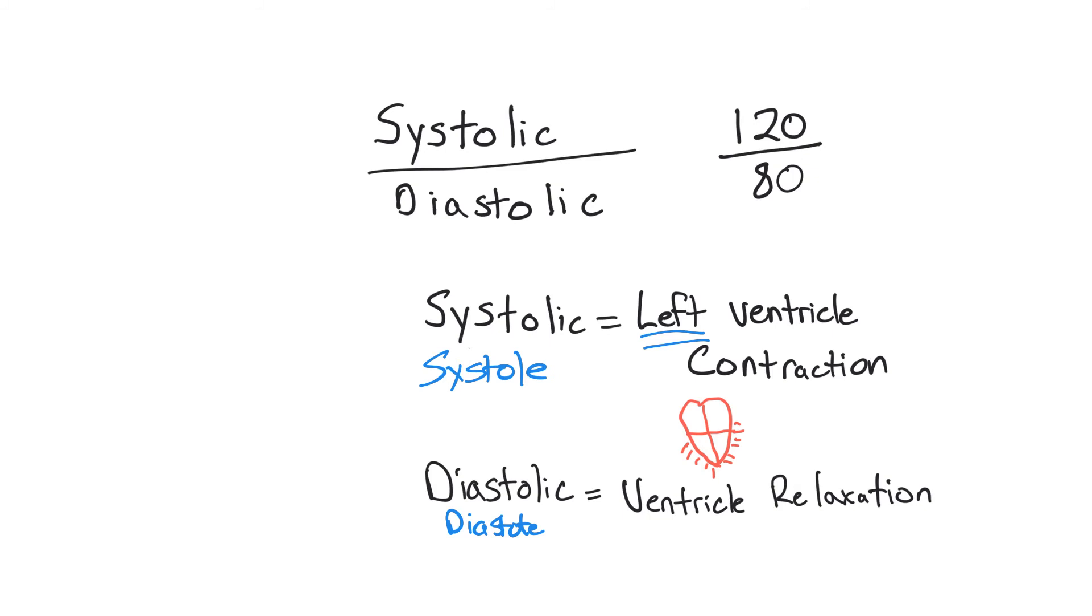Another way you can think of diastolic and systolic is systolic, we're measuring the pulse pressure as it comes through the artery. So we're, in essence, measuring how strong the left ventricle is. When we're in diastolic mode and we're getting the bottom number, we're measuring just the amount of pressure that's left in the blood vessel itself. And that's a measure of constriction, vasoconstriction.